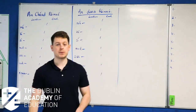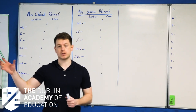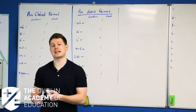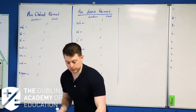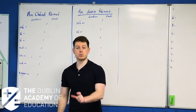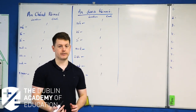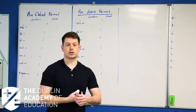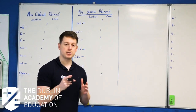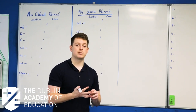In Irish, we have two types of verbs. We have verbs from an chéad réimniú agus verbs from an dara réimniú — the first grouping and the second grouping. An chéad réimniú, I've actually done it for you because I'm a lovely person, is our one-syllable verbs. Dún, fág, glan, cuir, brúigh. One-syllable verbs, small little verbs. And what we do is we just add a little ending on that lets us know who's talking and in what tense.